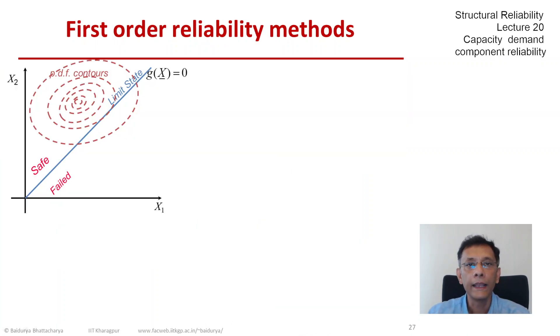Now in two dimensions this would be the representation of the problem, the safe set versus the failed set. And this is just copying the equation from the previous slide.